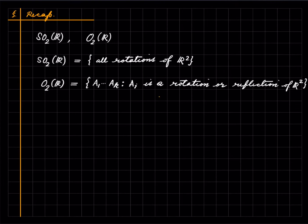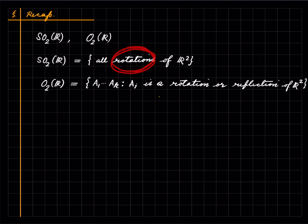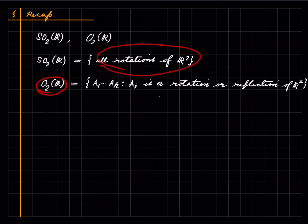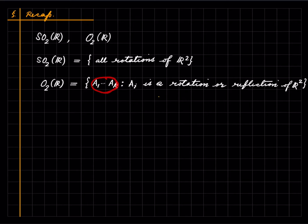Welcome to this lecture series in group theory. Last time we discussed the notion of the orthogonal group and the special orthogonal group. We defined the special orthogonal group as the set of all rotations of R2. The orthogonal group consists of those linear maps from R2 to R2 that can be written as a composition of rotations and reflections.